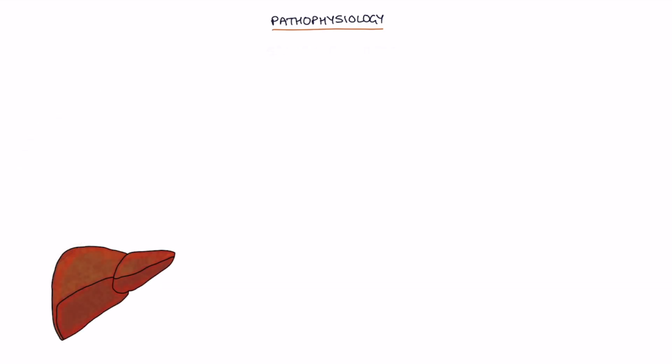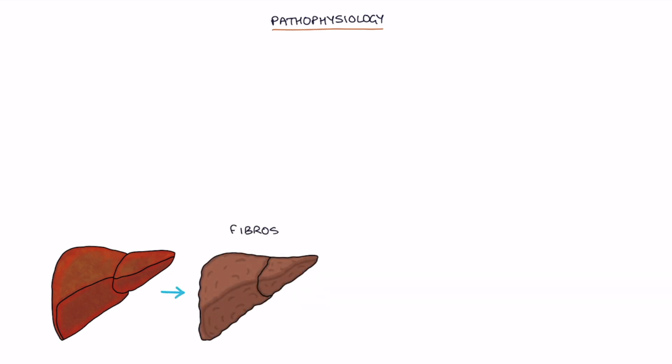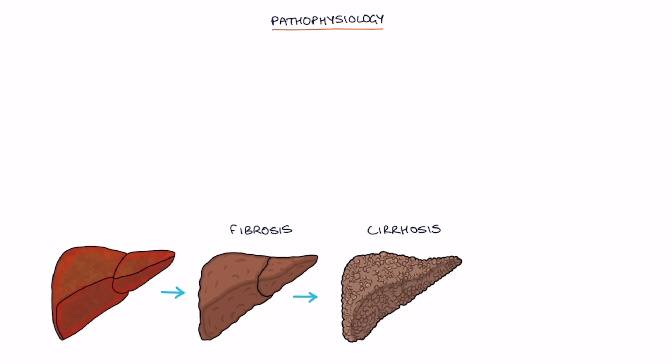Over time, this progresses to fibrosis or scarring, liver cirrhosis, and potentially hepatocellular carcinoma or liver cancer. Liver pathology can occur at any age, including childhood.